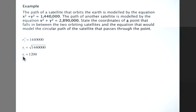Therefore, the equation that would model the path of the satellite passing through this point, 1,400 and 0, is x squared plus y squared equals 1,960,000. Remember that your answer could be different than this.